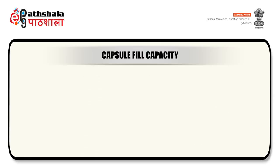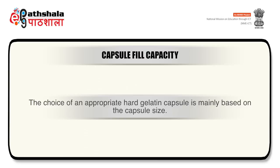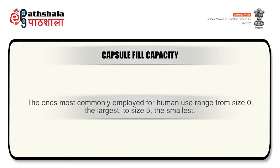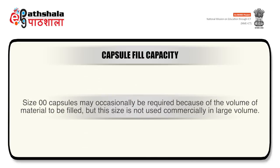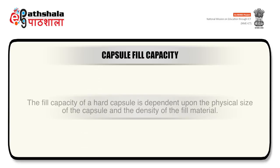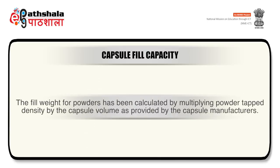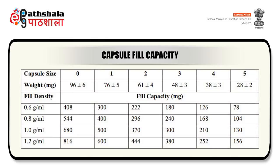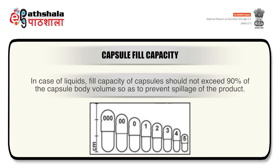The fourth step is capsule fill capacity. The choice of hard gelatin capsule is mainly based on capsule size. Sizes most commonly used for humans range from size 0 (the largest) to size 5 (the smallest). Size 00 may occasionally be required but is not used commercially in large volume. Fill capacity depends on the physical size of the capsule and the density of the fill material. Fill weight for powders is calculated by multiplying powder tap density by the capsule volume. For liquids, fill capacity should not exceed 90% of the capsule body volume to prevent spillage.